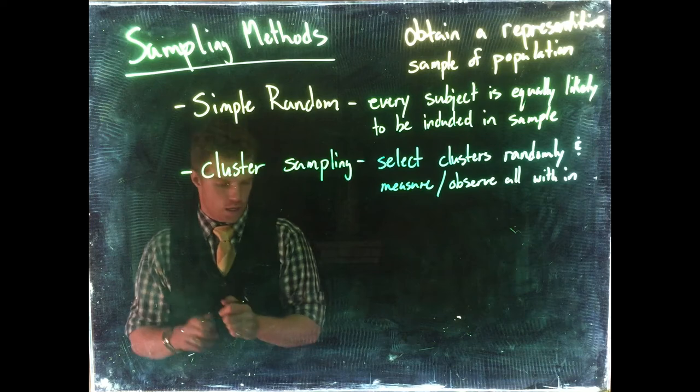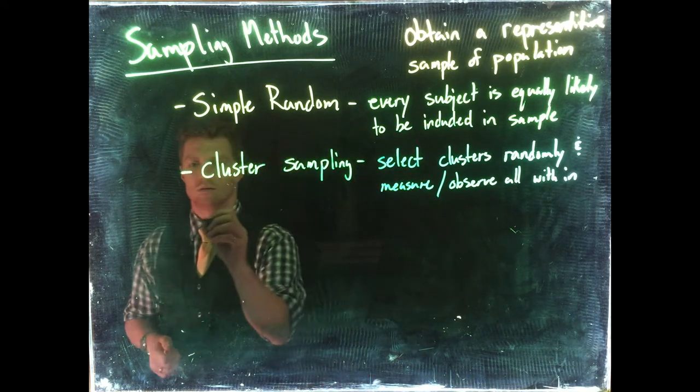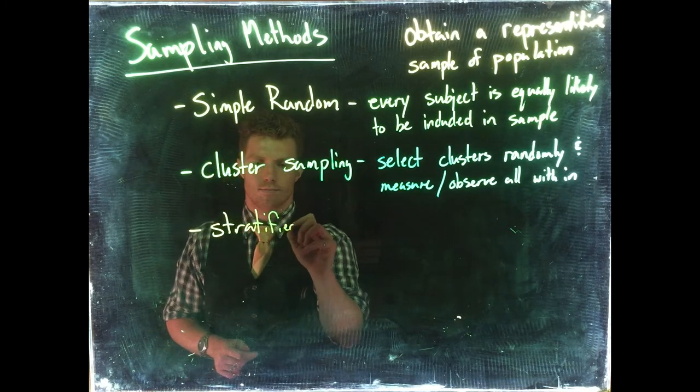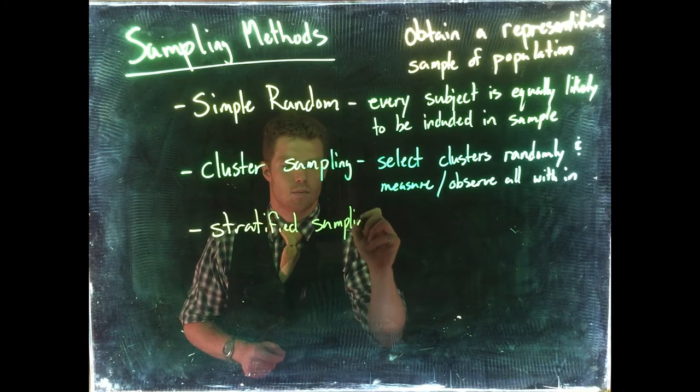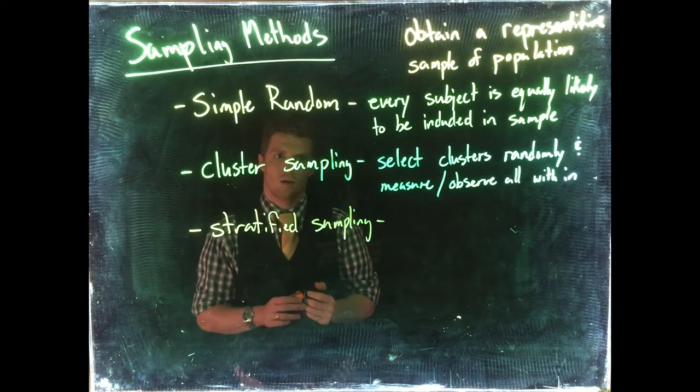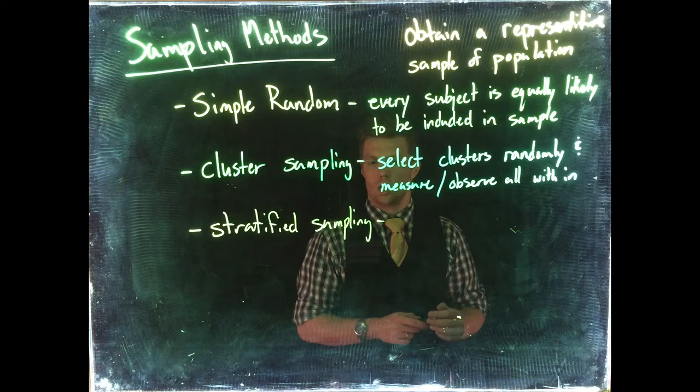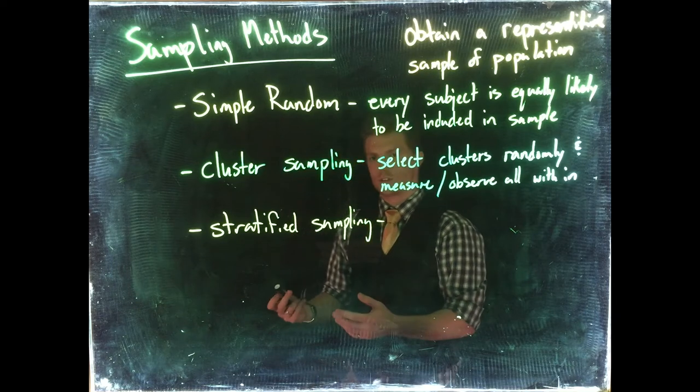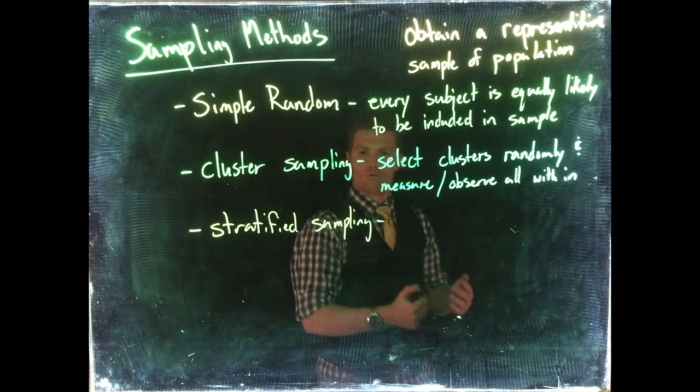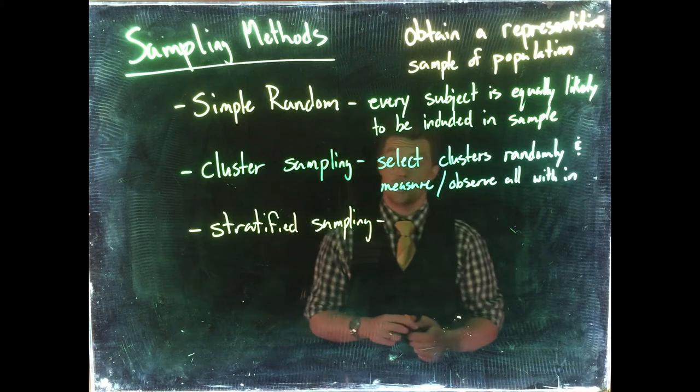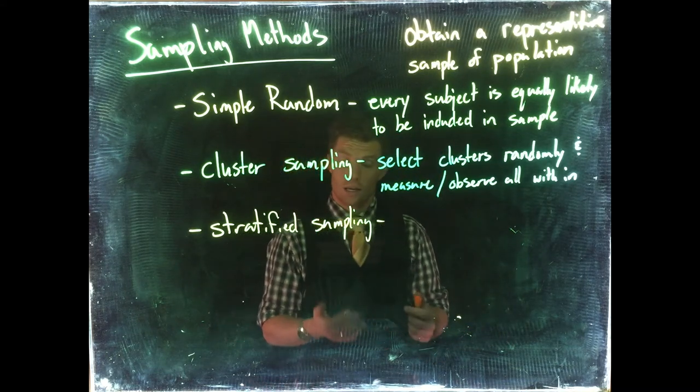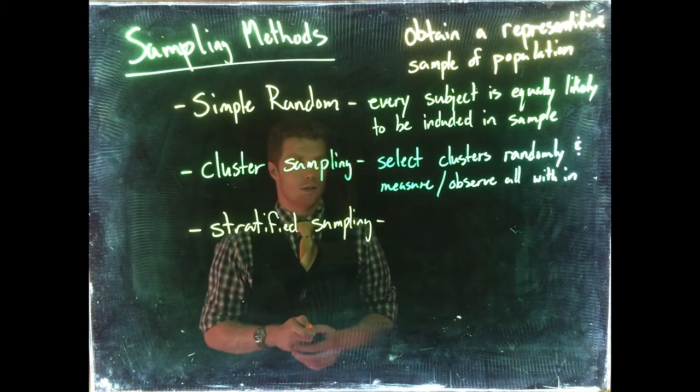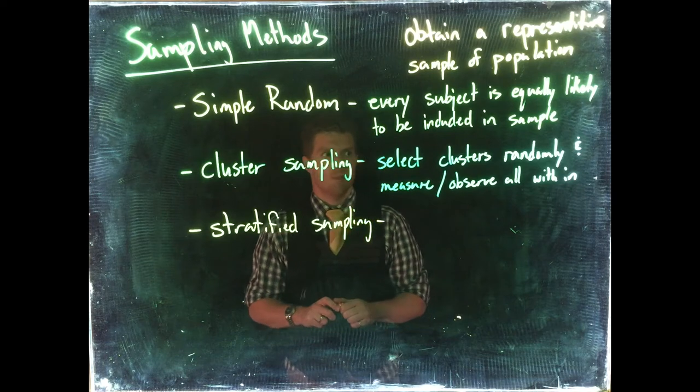Another one is stratified sampling. Stratified sampling would be like, we know that at Casper College, if we broke down the percentage by men and women, maybe there are 60% women at Casper College, 40% men. So what we would do is stratify our sample and make sure that in our random sampling we got 60% women and 40% men.